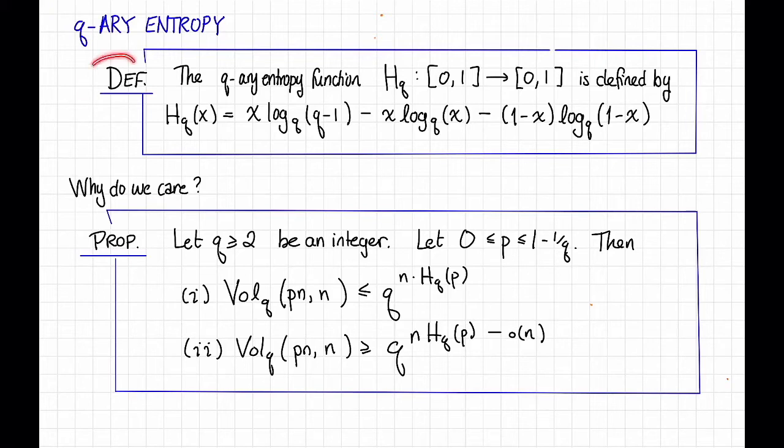So here's the definition. The q-ary entropy function H_q maps the unit interval to the unit interval, and it's defined by this formula here. h_q(x), where x is a number between 0 and 1, equals x times log_q(q-1) minus x times log_q(x) minus (1-x) times log_q(1-x).